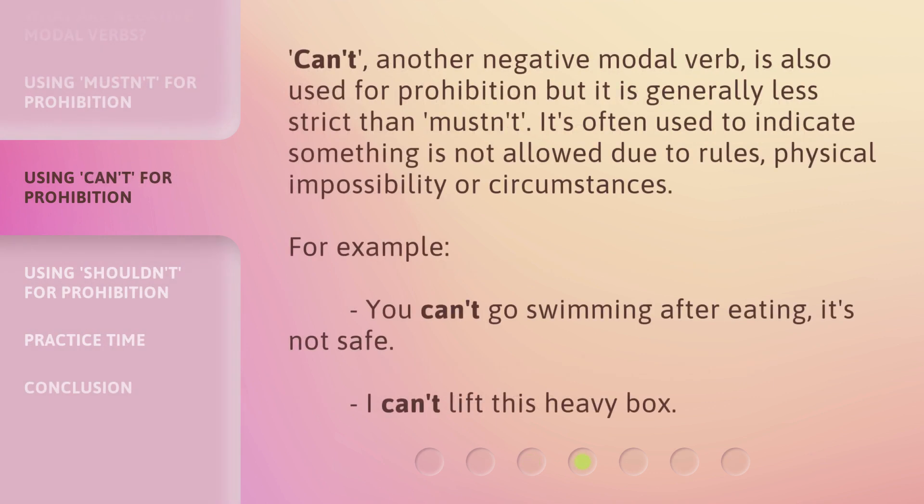'Can't' is another negative modal verb also used for prohibition, but it is generally less strict than 'mustn't'. It's often used to indicate something is not allowed due to rules, physical impossibility, or circumstances.